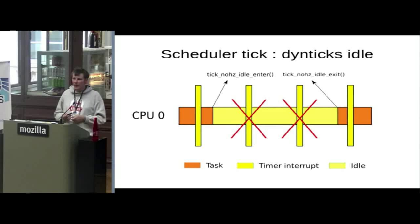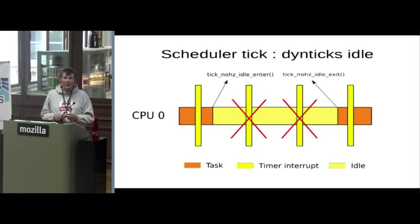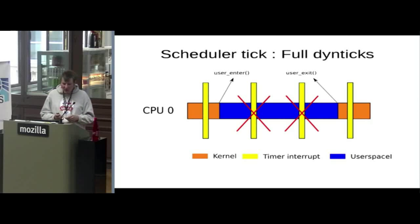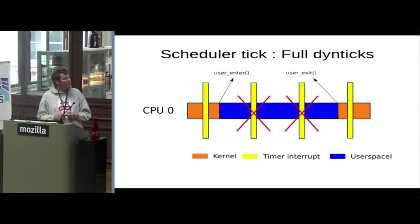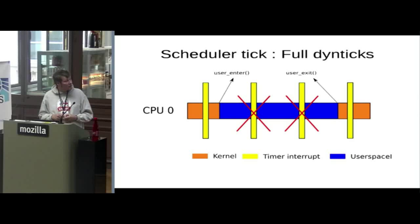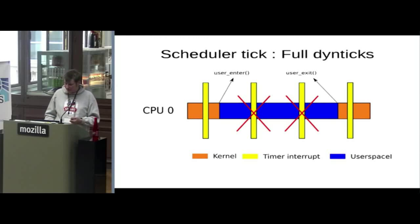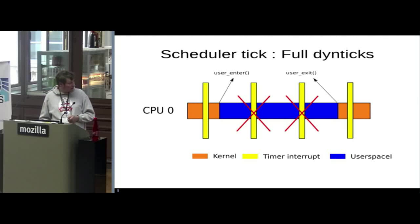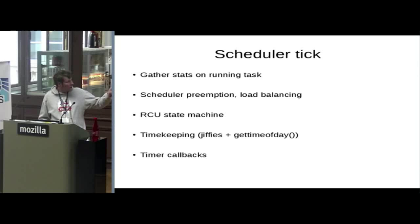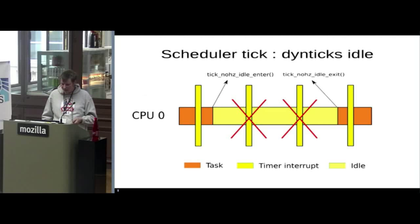Then we wanted to go further, because real-time and HPC want to get rid of the timer tick even when the CPU is busy. That's why we implemented full dynticks — not only stopping the tick when the CPU is idle, but also when the CPU is running user space. This comes at a real cost, because all the features that use the tick had to be re-implemented without that periodic event.